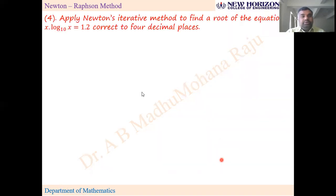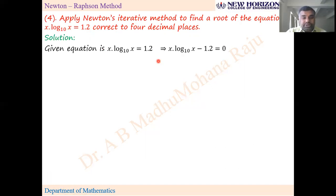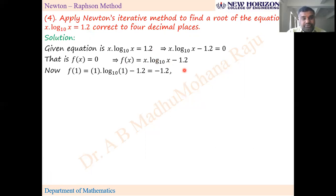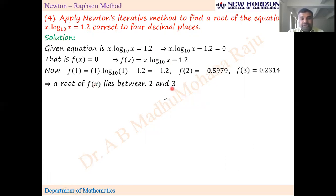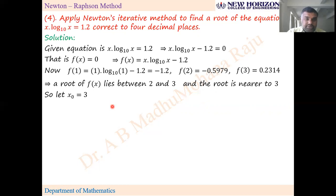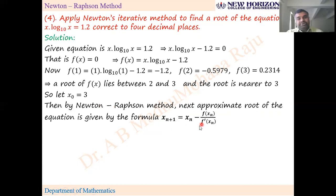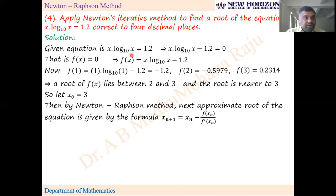Next problem: apply Newton's iterative method to find a root of x·log₁₀(x) = 1.2, correct to 4 decimal places. List f(x) = x·log₁₀(x) - 1.2 and guess the approximate root by trial and error — the root lies between 2 and 3, nearer to 3. Take x₀ = 3. Note: for f'(x), since log base 10 doesn't have a simple direct differentiation, use logarithmic properties to convert.